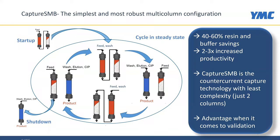Capture SMB is the most simple and most robust multi-column configuration for the capture of monoclonal antibodies or other valuable therapeutics using affinity chromatography and continuous chromatography. The process is a cyclic process that also has a startup and shutdown phase. It is based on the overloading of a first column filled with affinity material and the transfer of any breakthrough from the first column into the second column.